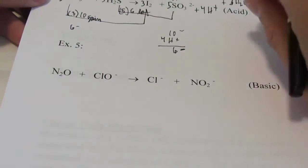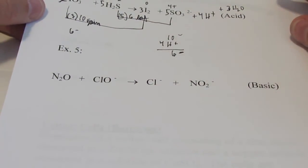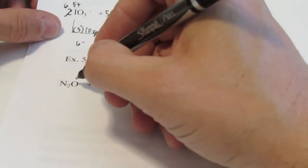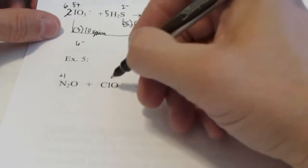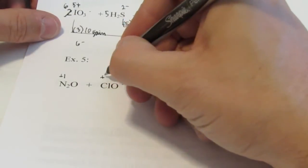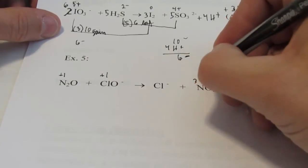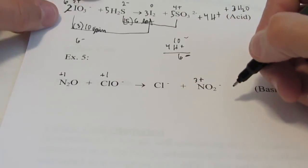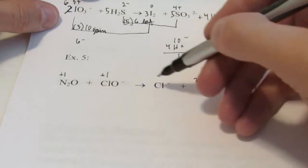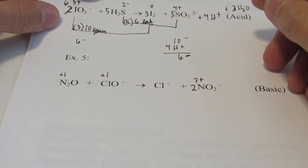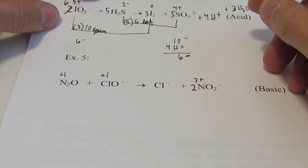Let's take a look at example five — this one's a basic solution, so we'll use hydroxides to balance the ionic charge instead of hydrogen ions. On this side, nitrogen is +1 and chlorine is +1. On the other side, Cl is −1 and nitrogen is 3⁺. Chlorine changed — one on each side. Nitrogen: two here, so I've got to put a two there to give me two nitrogens on both sides. Steps one and 1A are done.